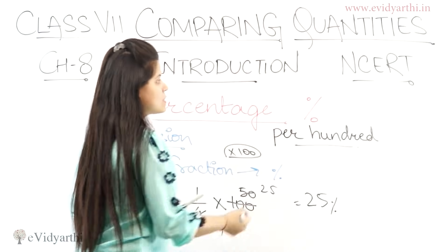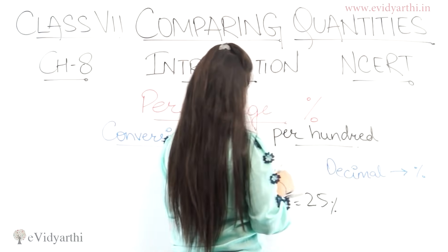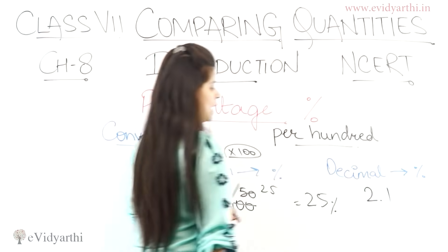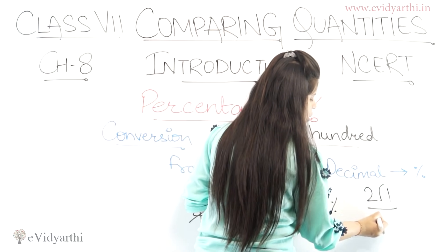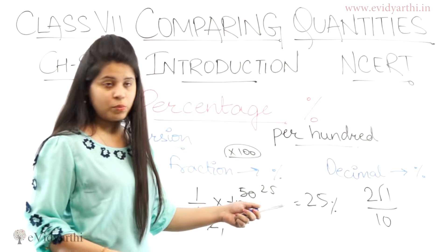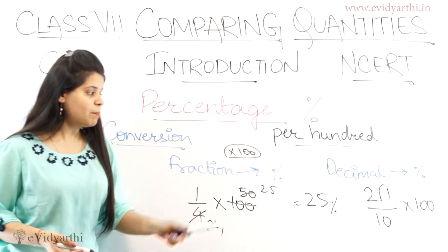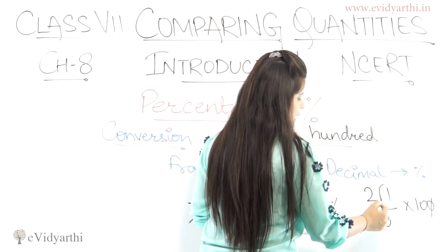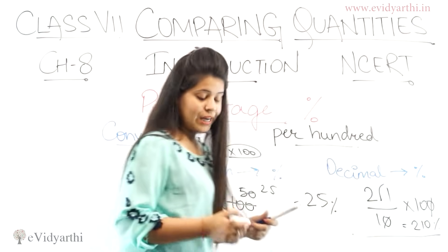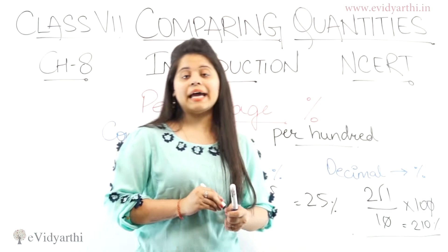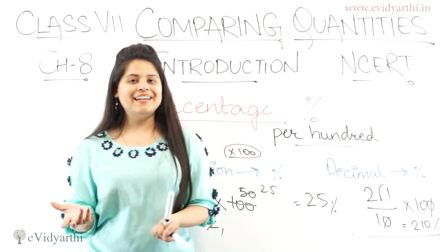Similarly, if you need to convert a decimal to percentage — for example 2.1 — first remove the decimal point: it becomes 21/10. Then multiply by 100 as usual. 21/10 × 100 = 210%. For decimals, first write it as a fraction (removing the decimal point), then multiply by 100. So for fraction: directly multiply by 100. For decimal: first convert to fraction, then multiply by 100.